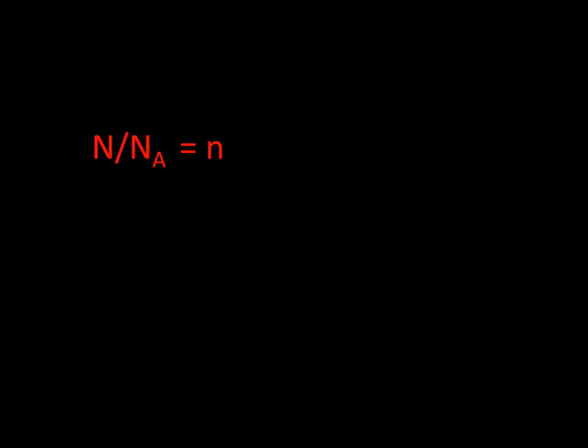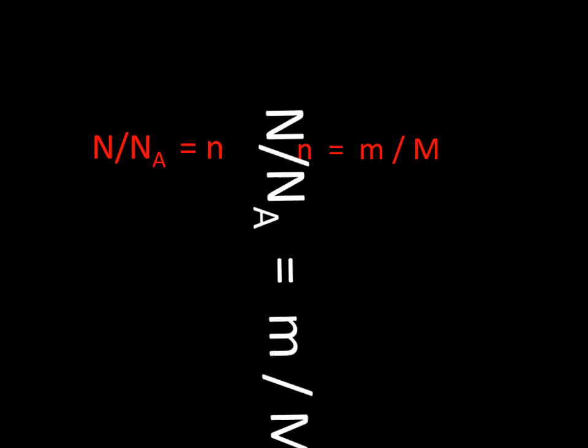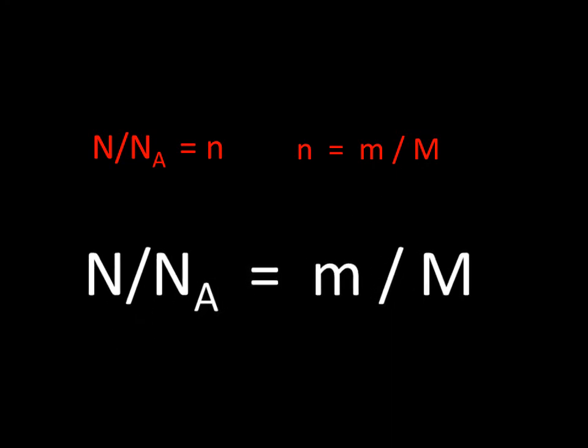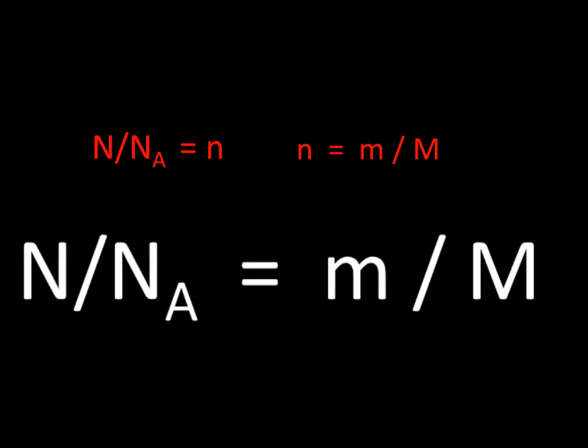Since we know that the number of moles is equal to the number of items divided by Avogadro's number, and we also know that the number of moles is equal to the mass divided by the molar mass. It follows that, if we want to put this together, the number of items divided by Avogadro's number is equal to the mass divided by the molar mass. And by manipulating this, we can do all sorts of calculations.